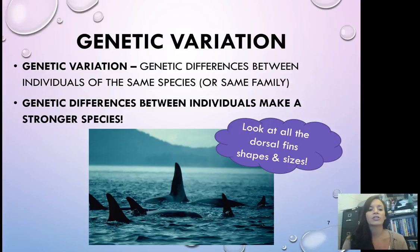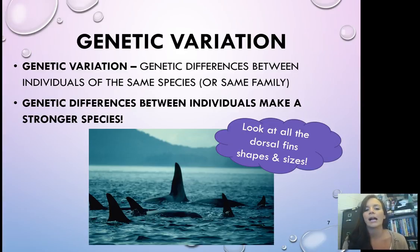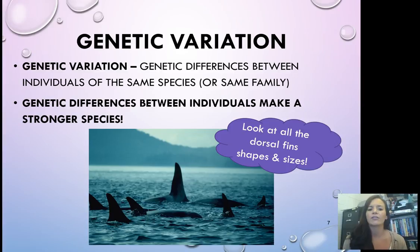Genetic variation is just those differences between the same species or same family. You don't want a bunch of clones because then if a disease comes through, it's going to knock out the entire population, not just a couple of individuals. If you look at the picture, you'll see all the different dorsal fins — all the shapes, all the sizes. Males have taller fins, but you'll still see variance in them. And there are also going to be DNA differences inside their bodies as well.